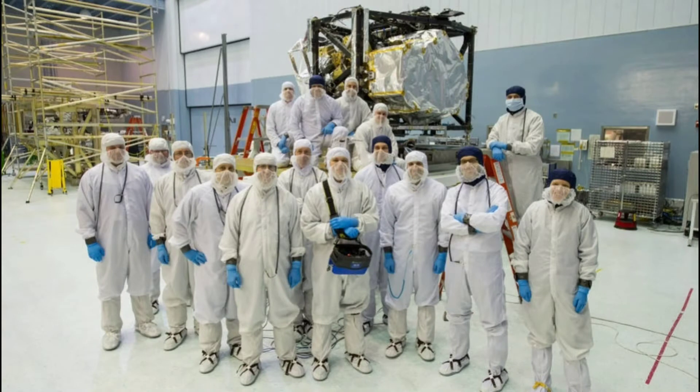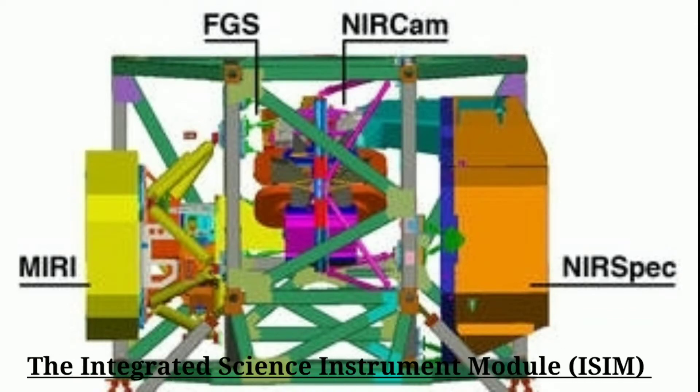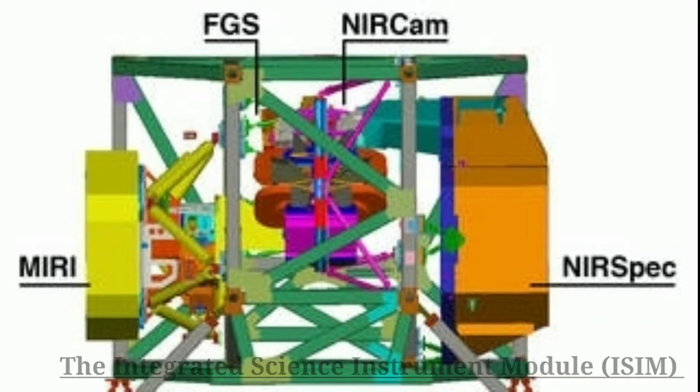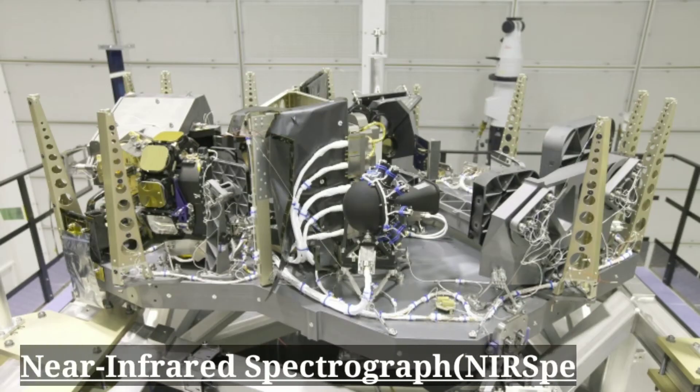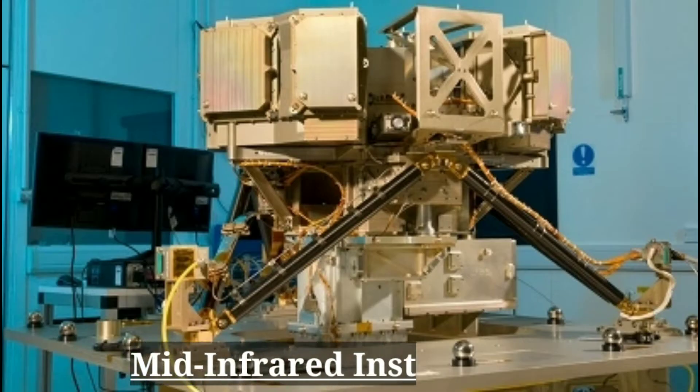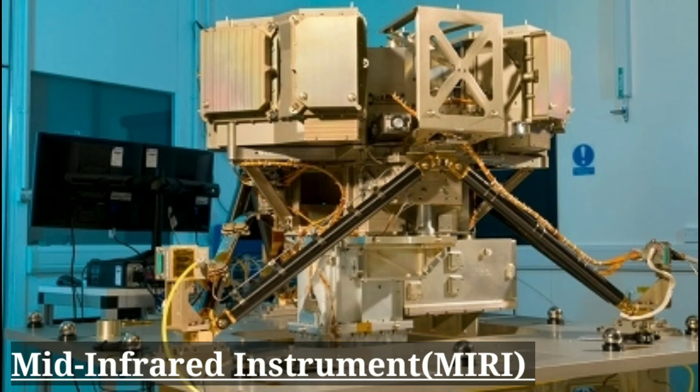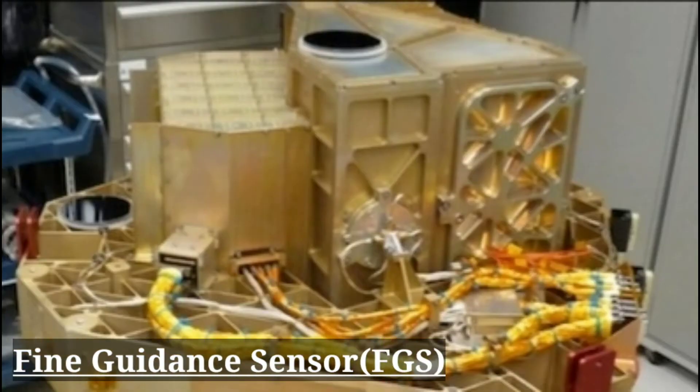This is a group photo of James Webb Space Telescope project members with the complete integrated science instrument module ISIM. The ISIM includes a near infrared camera NIRCam, a near infrared spectrograph NIRSpec, a mid infrared instrument MIRI, and a fine guidance sensor FGS.